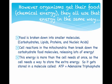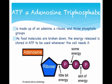So the body digests food, and once the carbohydrates get to the cells, they have to break it down into a little bit of energy that it can use — a little bit at a time. This little bit of energy is called ATP, or adenosine triphosphate.